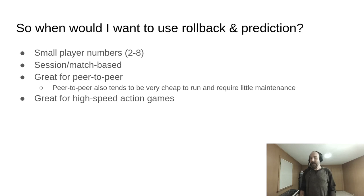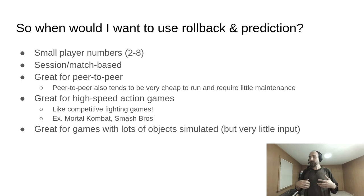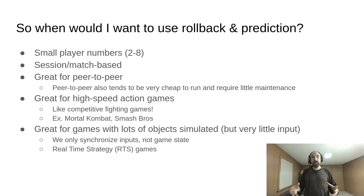It's great for high-speed action games like competitive fighting games. There's a reason rollback and prediction is most commonly used in competitive fighting games—your Mortal Combats, your Smash Bros. It's also great for games with lots of objects simulated but very little input. Let's say you have a real-time strategy game with four players, each with 200 units. That's 800 units. Synchronizing all of that state would be difficult, but you only have four humans at a keyboard and mouse generating input.